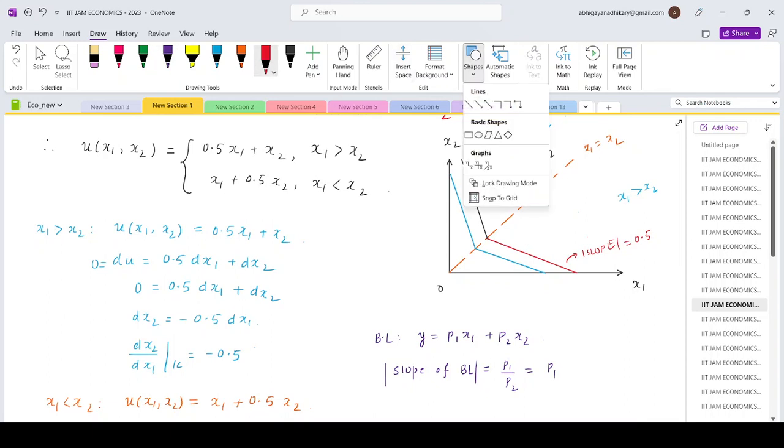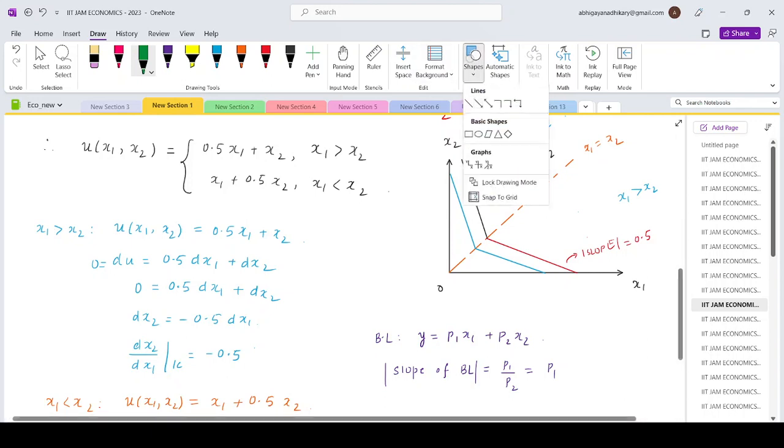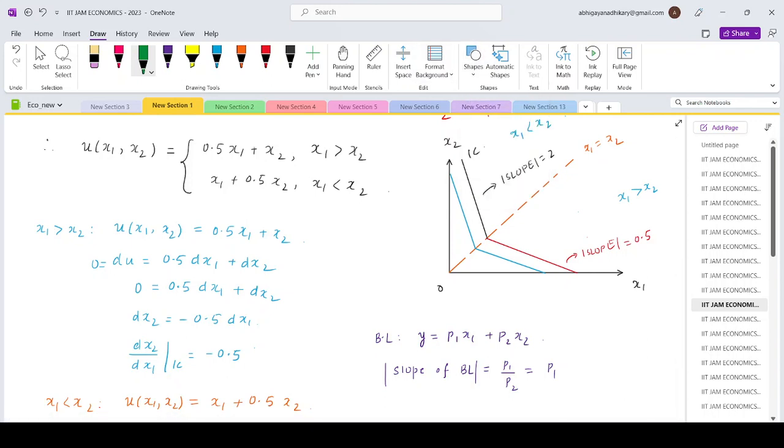So now the question is what should be the slope of the budget line? If you look at the diagram, if the budget line slope is steeper than 2, that means more than the upper part, in that case the optimal would be to buy only x₂. On the other hand, if the slope of the budget line is something which is lesser than half, that means smaller than the lowest part, then the optimal would be to buy only x₁.